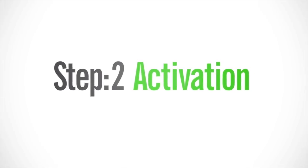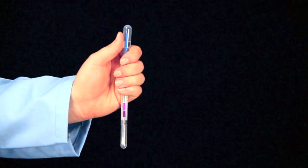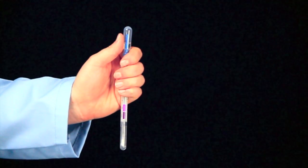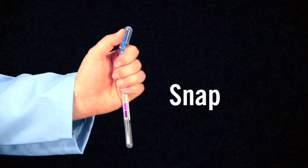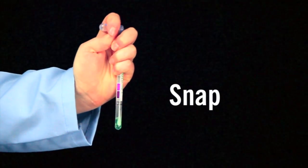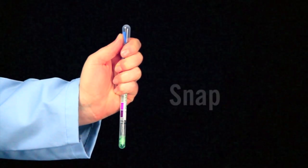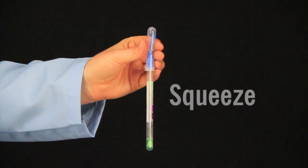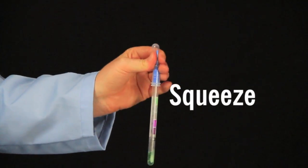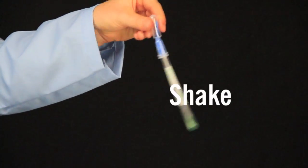The second step is activation. The easiest way to activate Allersnap is to hold the device in your fist and use the thumb and forefinger to break the snap valve by bending the bulb forward and backward. Next, squeeze the bulb to expel liquid into the tube. Then shake for 5 seconds.